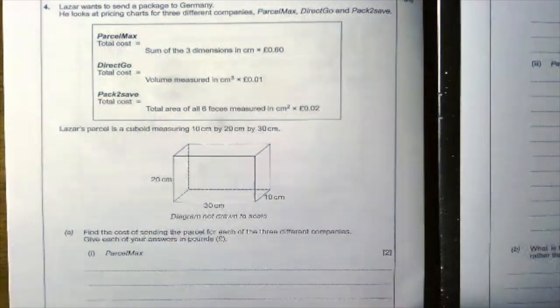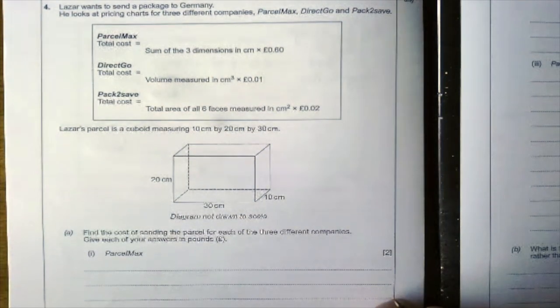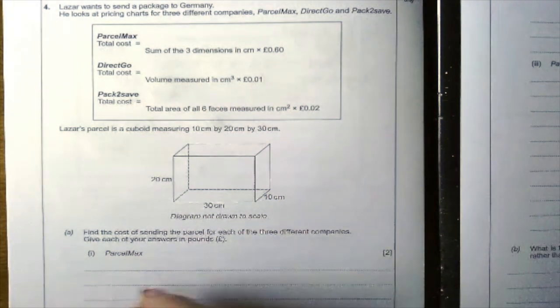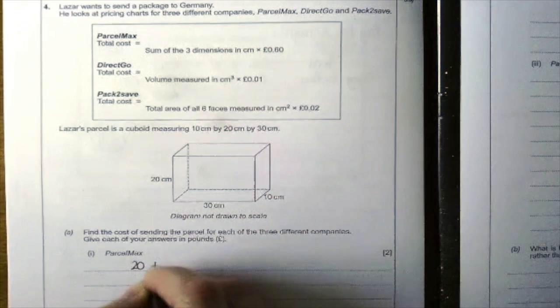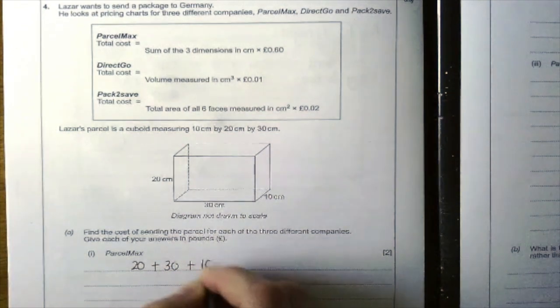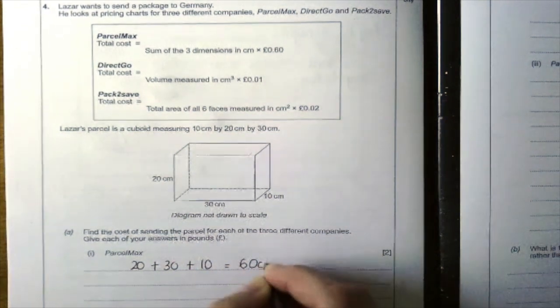So you're going to add the three dimensions together. So I've got 20 plus 30 plus 10 which is 60 centimeters.